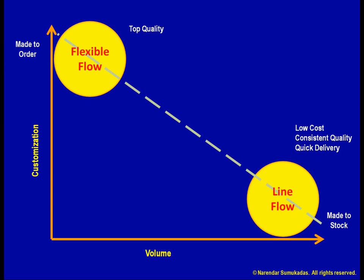A promise is only as good as the underlying estimate. If I am producing dozens upon dozens of the same sandwich each week, how well do I know the time taken for each sandwich? On the other hand, if each sandwich I produce is different, how accurate is my estimate of how long the next sandwich will take?